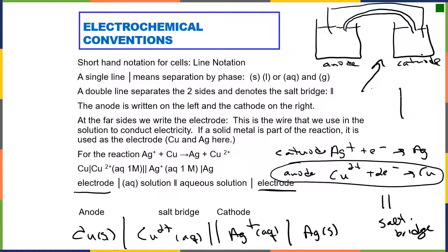If you have a gas in there, you're going to have to have one more line for the gas as well. But most of them are going to be fairly straightforward: electrode, contents of the beaker, salt bridge, contents of the beaker, electrode. Anode on the left, cathode on the right.